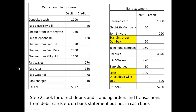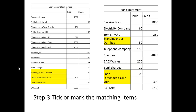The second step is to look for direct debits, standing orders, and any other transactions such as debit cards on the bank statement but not in the cash book. Three items are found: a standing order paid out to Dombey, a bank loan of £100 paid out, and a direct debit which was a payment in of £300. So there are two payments out and one payment in, and they have to be entered now to the cash account for the business.